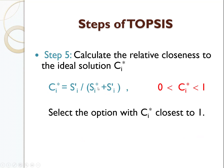You will get Si as the separation value. Then you need to sum it and calculate the relative closeness to the ideal solution. Those alternatives whose value is near to 1 are the best — you will select that option. In the previous example, Hunza was the best one because its value was approaching 1. Normally, all alternative values will lie between 0 and 1, and you need to choose the option which gives you the maximum value.